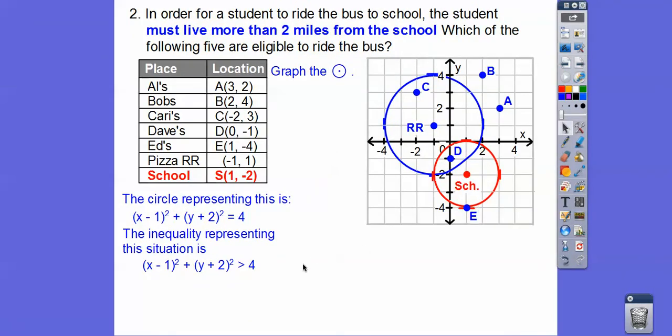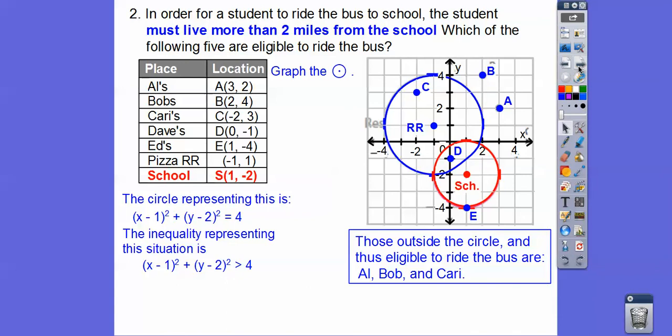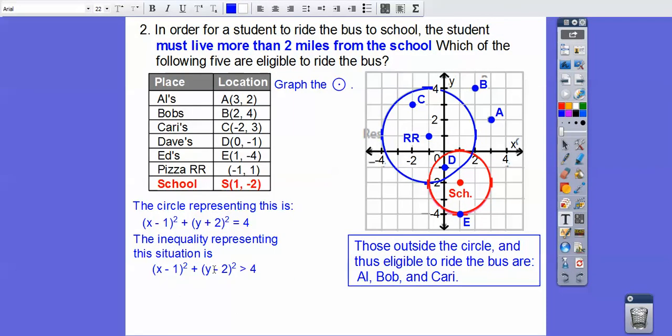This inequality, so the people who can ride the bus, is more than 2. So, it's going to be greater than 2 squared, which is 4 right there. So, who's farther? Who's outside the circle right there? You ever watch that? What is that? Meet the parents or something like that outside the circle of trust? Anyways. So, Carrie's outside. She gets a school bus ride. Bob's outside. Al's outside. So, those are the ones that are going to get that free ride to school. So, they're eligible for the bus ride right there.